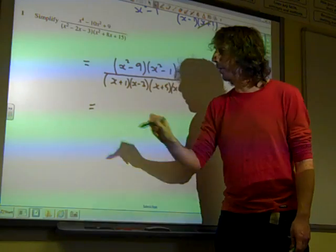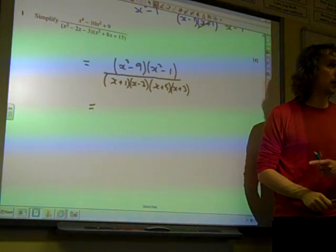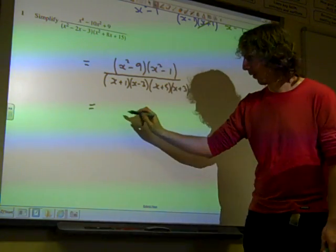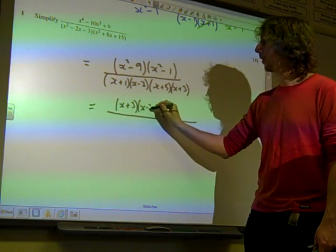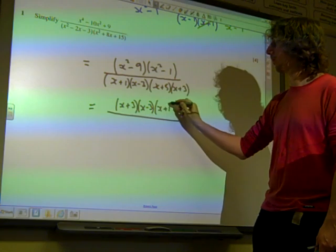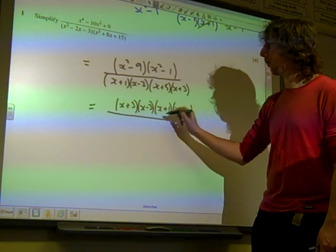And as Harry said a moment ago, the top line only factorises further because it's difference of two squares. So once we've got all of that done, we've got x plus 3, x minus 3, and then that would be x plus 1, x minus 1,